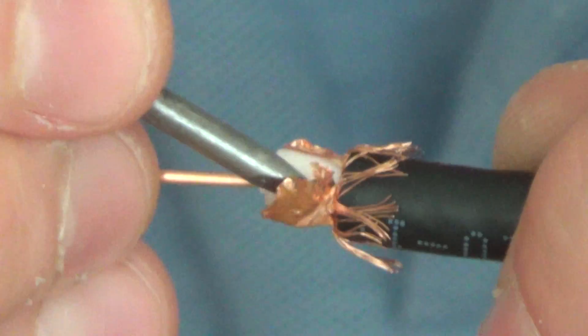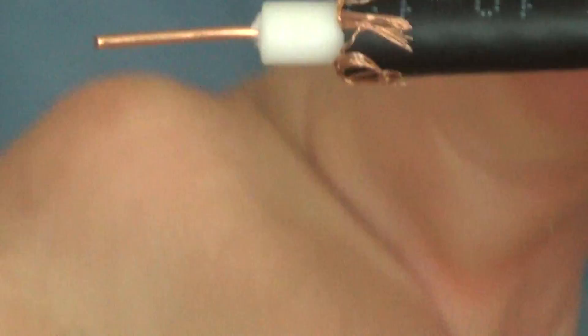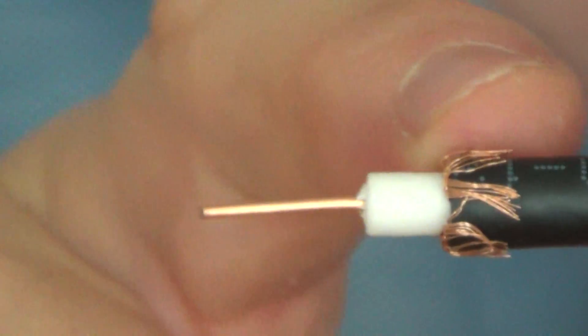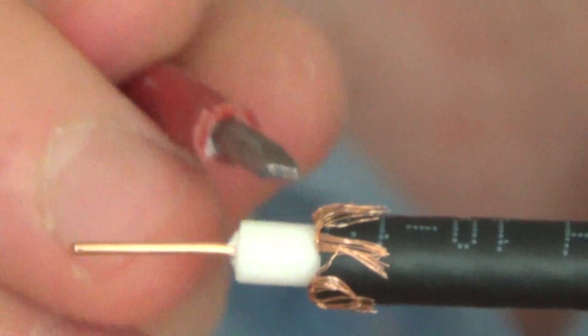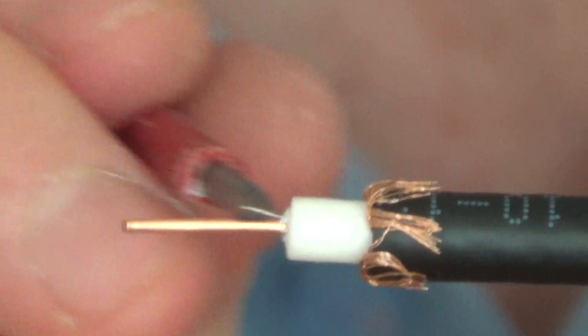So now we want to just basically peel that foil off, go around the cable. Now let's remove the foil. And now we're left with the outer sheath, the braid folded back onto the outer sheath, the foam dielectric and the central conductor. And that's what you want.